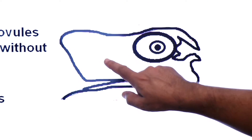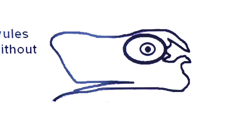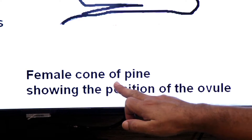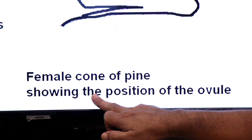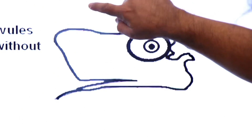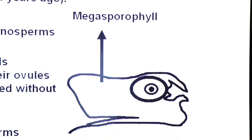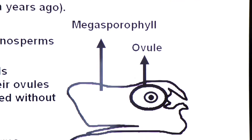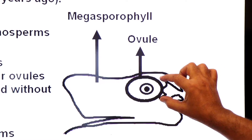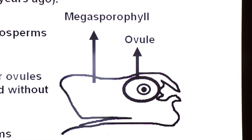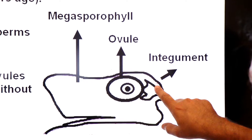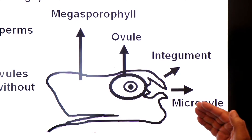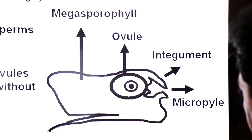Here you see megasporophyll — this leaf is called megasporophyll, and the female cone is an aggregation of megasporophylls. This is pine showing the megasporophyll of pine, or the female cone of pine, showing the position of the ovule. This is a modified leaf known as megasporophyll, and megasporophyll bears the ovule in naked position. This is the integument — the protective covering around the ovule — and this is the opening of the ovule known as the micropyle. Through the micropyle, the pollen tube enters for the purpose of fertilization.